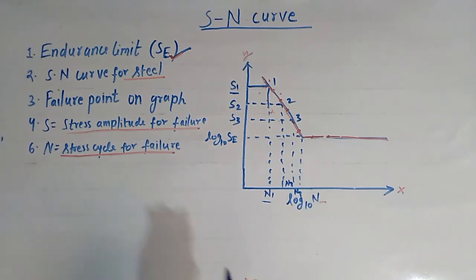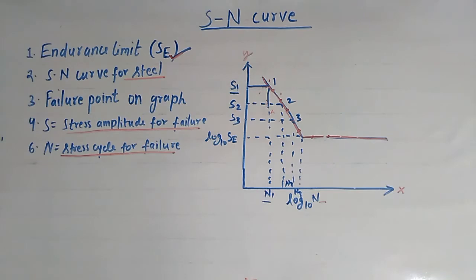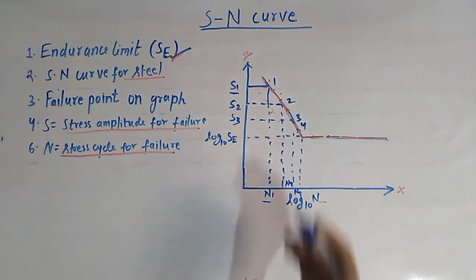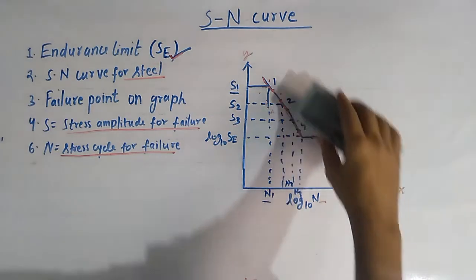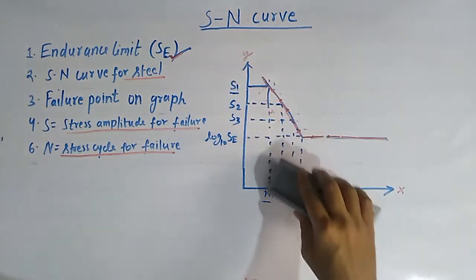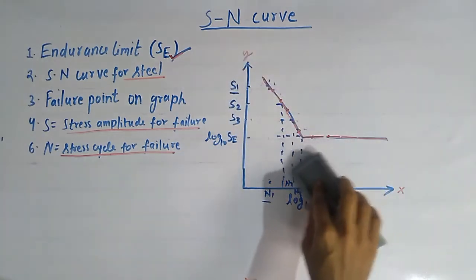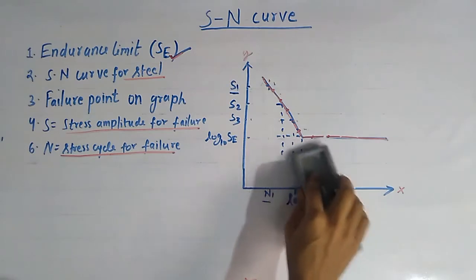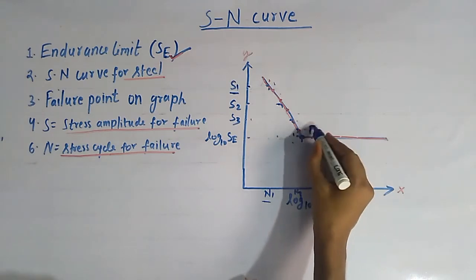There will also be a point 3 with stress amplitude S3 and failure cycle N3, as well as further points S4 and S5. The graph is constructed using the data for S1, S2, S3 and corresponding cycles N1, N2, N3. Once we have plotted this graph using this data, we will ultimately reach a point denoted by E.